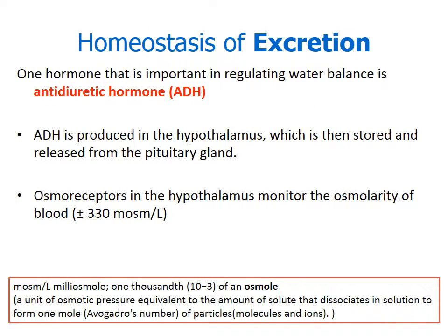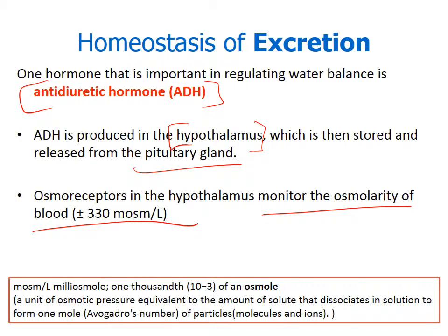For homeostasis via excretion, we rely on excretion to help keep water levels balanced. The important hormone responsible is ADH — anti-diuretic hormone. ADH is produced in the hypothalamus, that control center of responses to stimuli, and is stored and released from the pituitary gland when needed. Osmoreceptors in the hypothalamus monitor the osmolarity of the blood, and if water levels are not fine, the hypothalamus starts secreting ADH.